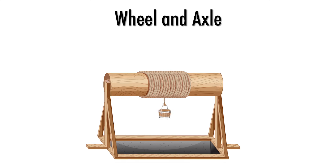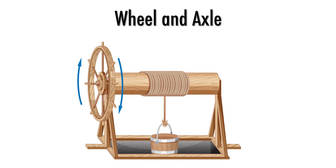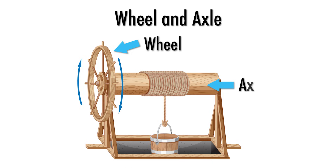The wheel and axle is a simple machine made of two connected circular objects of different sizes. The larger wheel's radius provides a mechanical advantage, multiplying the force applied to the axle or the distance the wheel moves.